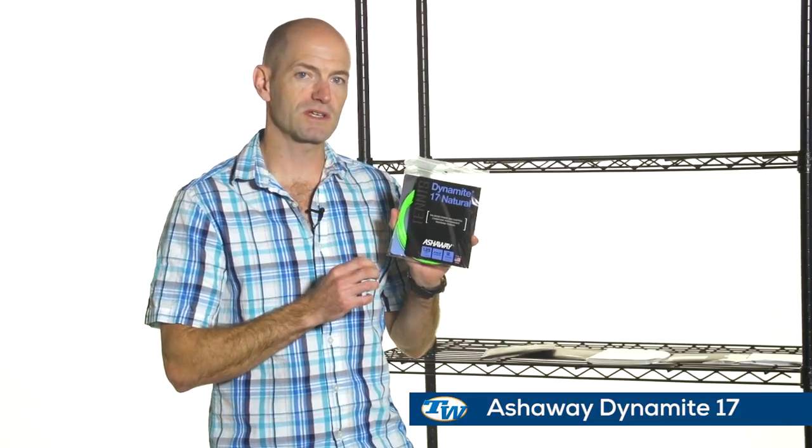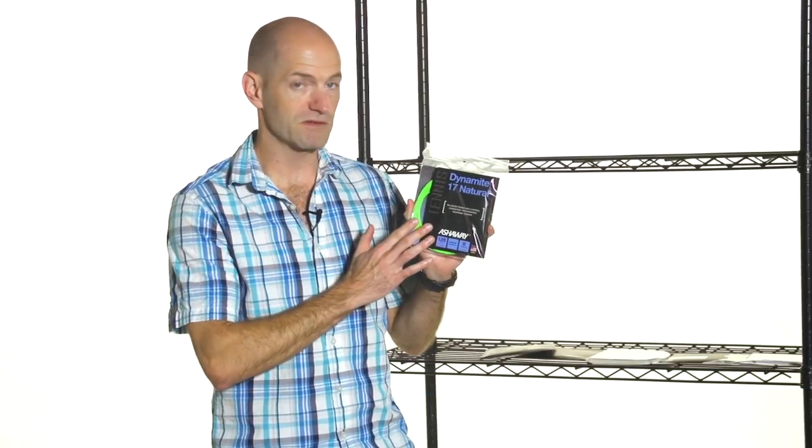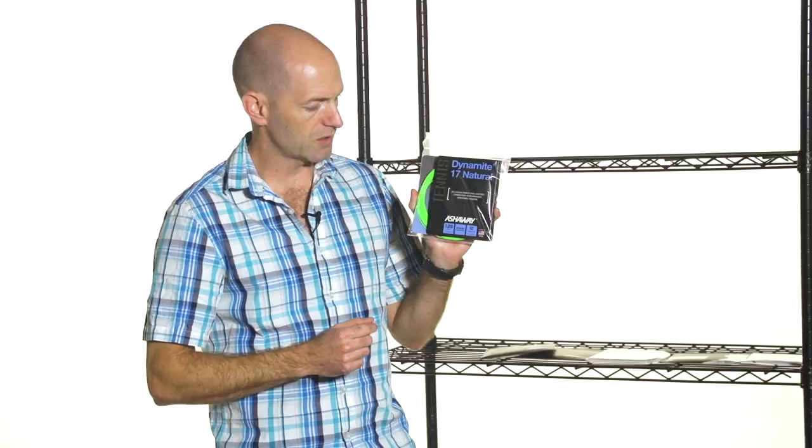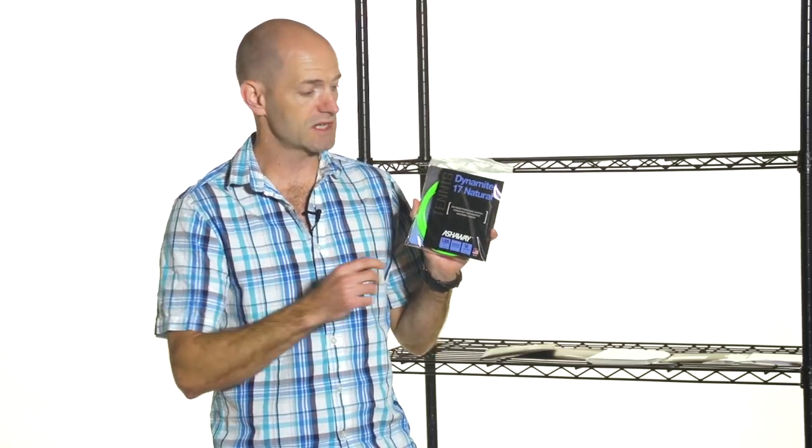First up we have Ashaway Dynamite 17. This is one of the softest multi-filaments we offer. It comes in a variety of colors, but we have the fun lime green one with me today. And this one is actually as soft as some natural gut strings out there.